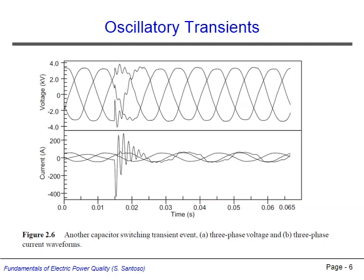This figure shows another capacitor switching transient, this one showing the effects on all three phases. The switching occurs at about 15 ms, causing a large oscillation in the current of one phase, along with significant oscillations on all three phase voltages. These oscillations have mostly been damped out by about 10 ms later.